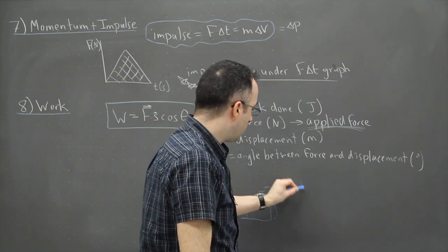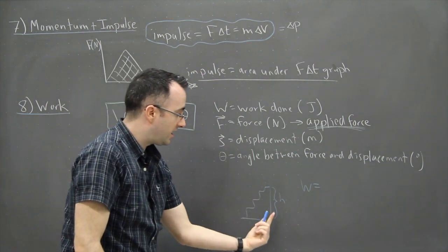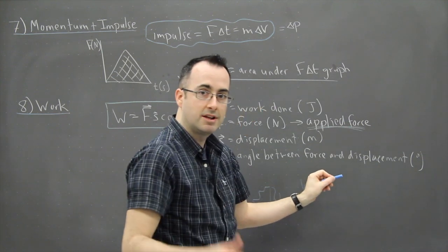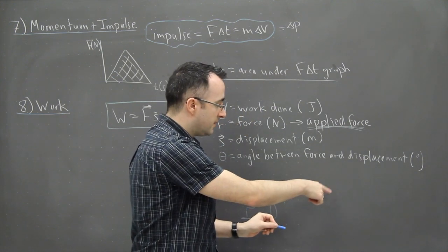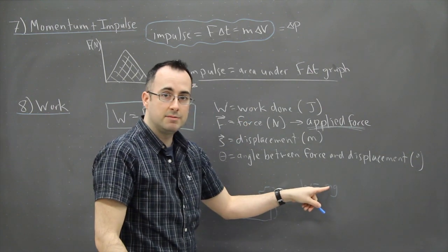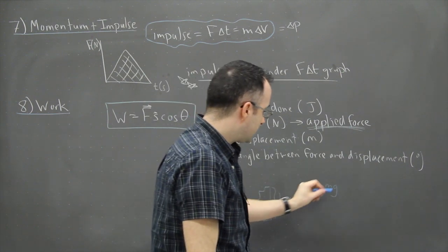In that sense their work done is going to be the force that they've applied. In this case if they go up they have to apply a force that's equal to, we can use Newton's second law, the force they've done is their mass times the acceleration due to gravity.